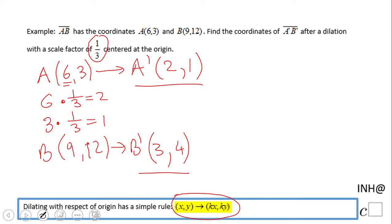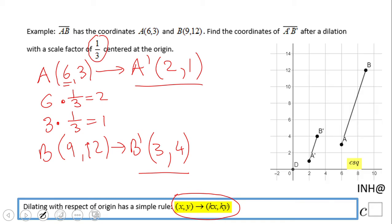I do have a graphical approach here, which is hard to be done, but just take a look. Whenever the scale factor is less than one, the segment is going closer to the center of dilation, and you notice this is three times smaller than the other one.